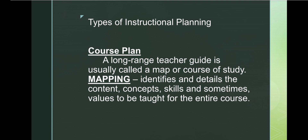We have two types of instructional planning: the course plan and mapping. A course plan is a long-range teacher guide, usually called a map or course of study. It covers the whole semester and includes not only the goals and content topics to be taught, but also what students will do during the course. Mapping identifies and details the content, concepts, skills, and sometimes values to be taught for the entire course.